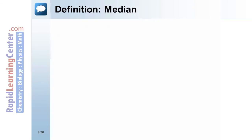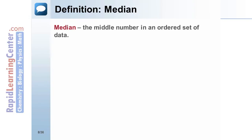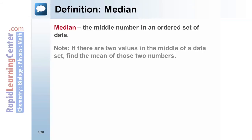Median. The median is the middle number in an ordered set of data. If there are two values in the middle of a data set, find the mean of those two numbers.